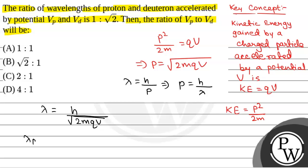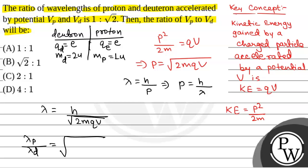Now, lambda of proton to lambda of deuteron is given as 1 by root 2. And that will be equal to root over H for deuteron and proton. We will compare charge. So, charge on deuteron is equal to E and charge on proton is also equal to E, that is electronic charge. But mass of deuteron is equal to 2 unit and mass of proton is equal to 1 unit.